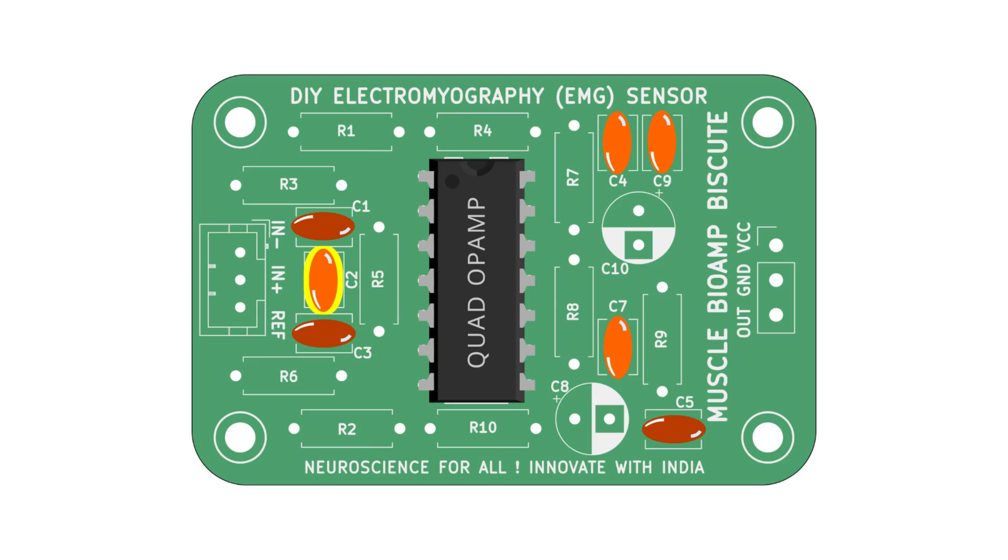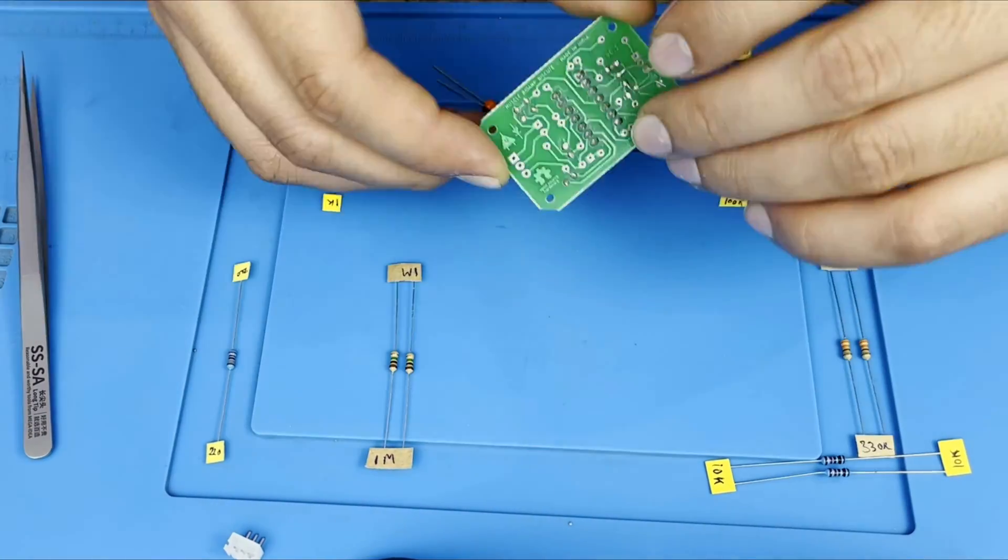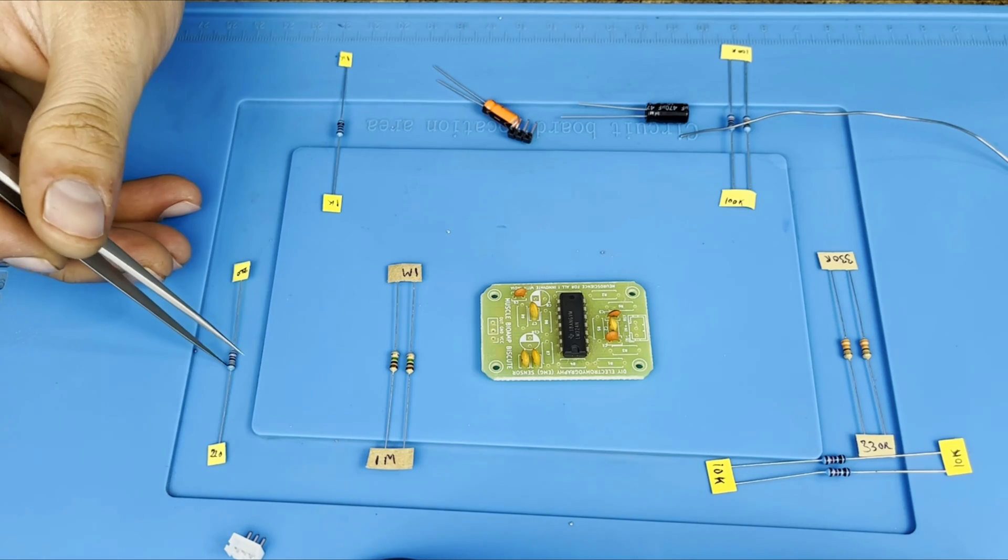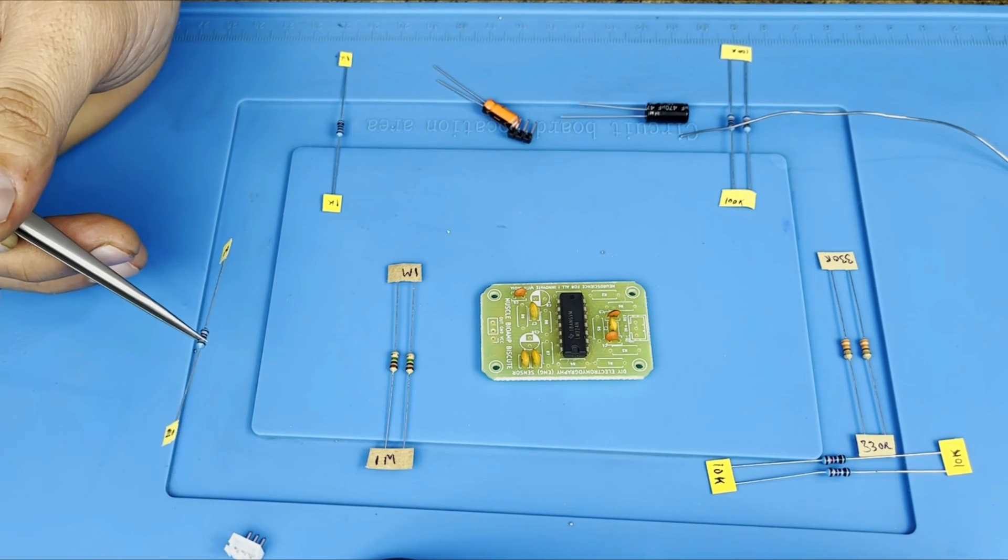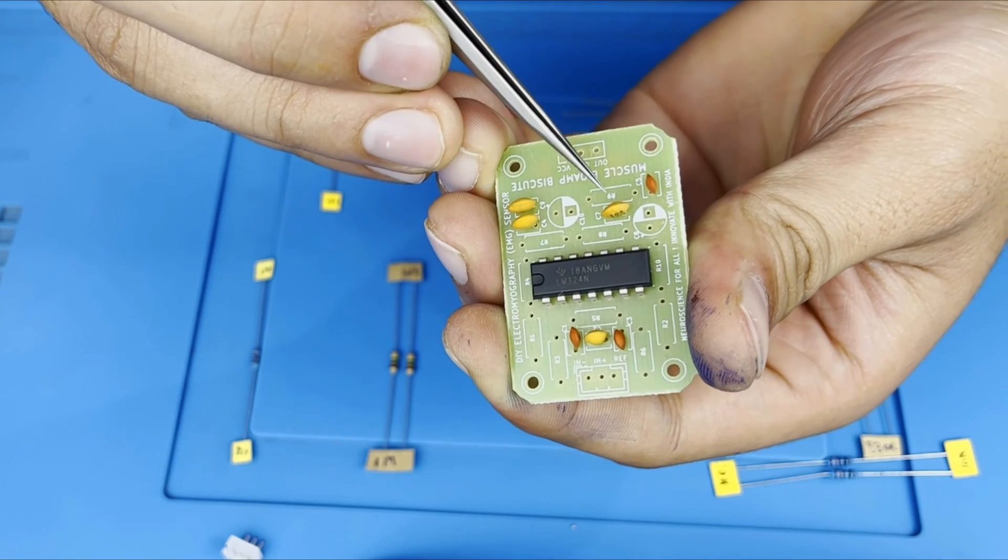Now we will take 4.7NF. By this diagram you can see we have to insert it in the C2 location. This is our 220K resistor, it is located in the R9. By this diagram you can see R9 over here.